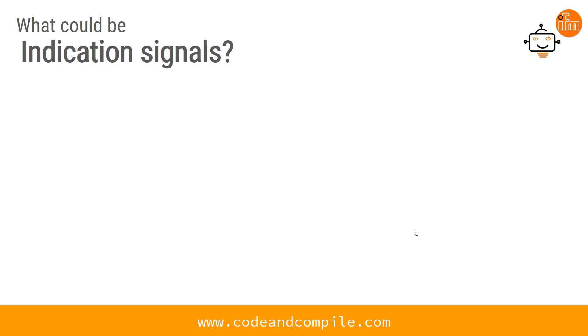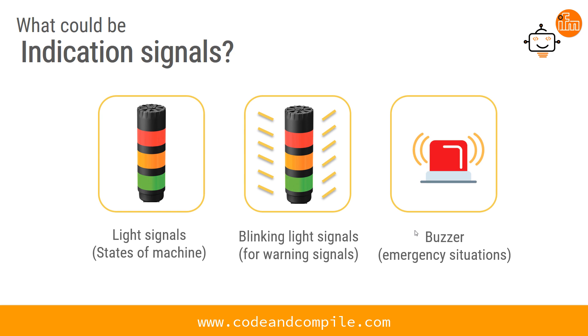In summary, indication signals include light signals for machine state, blinking light signals for warnings, and a buzzer for emergency situations.